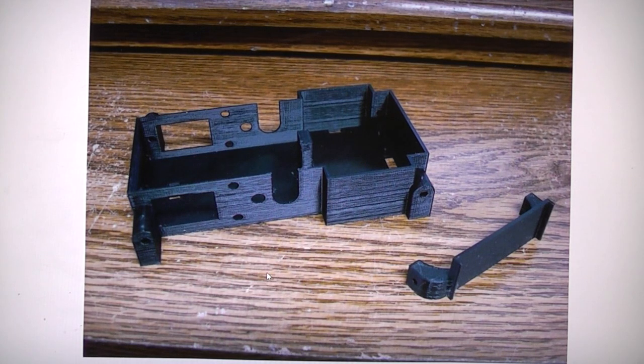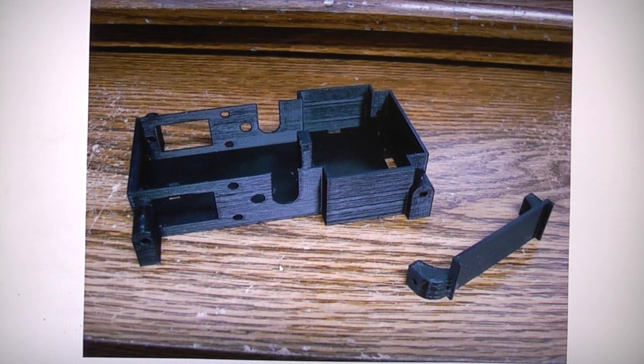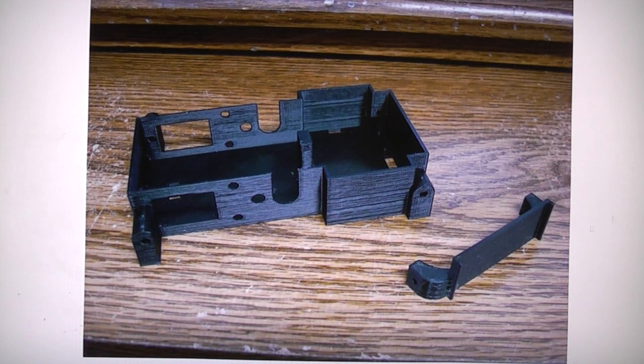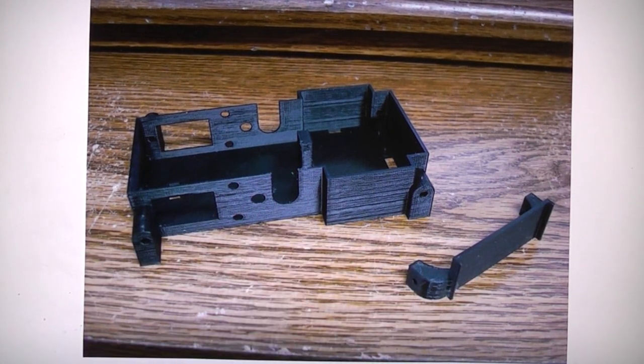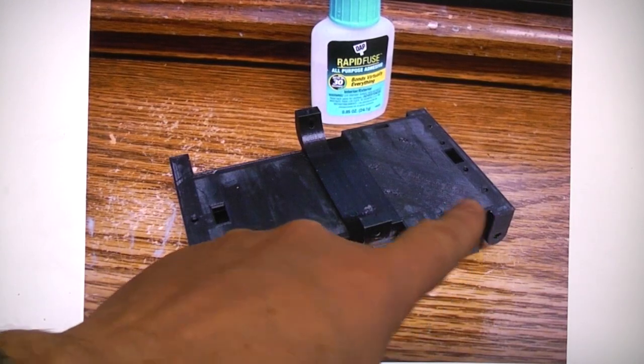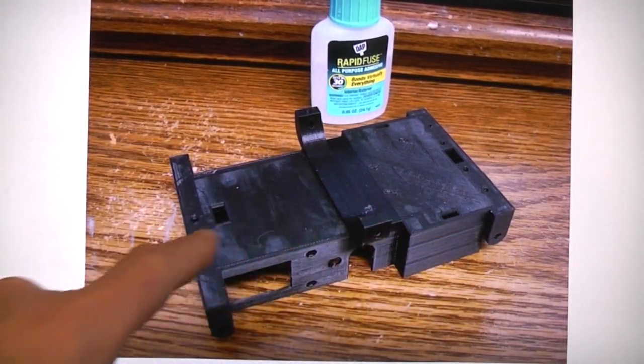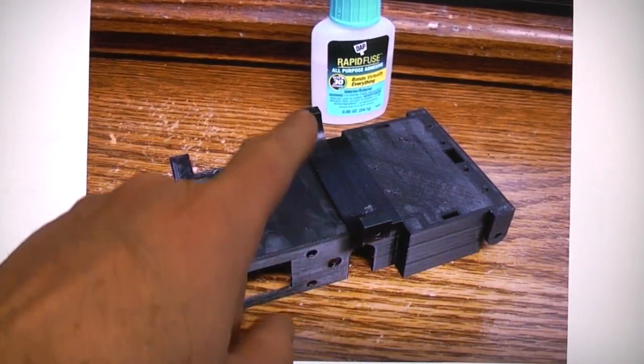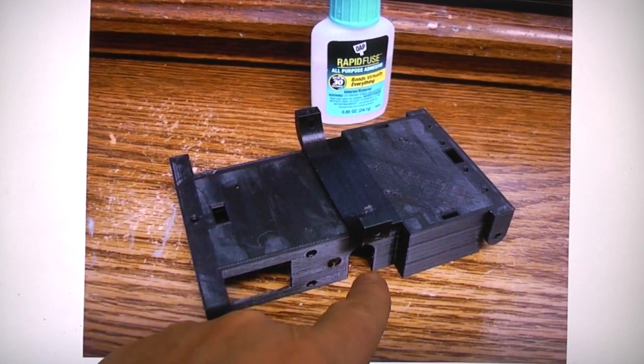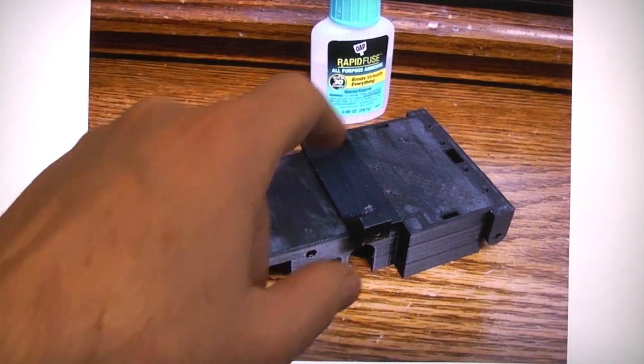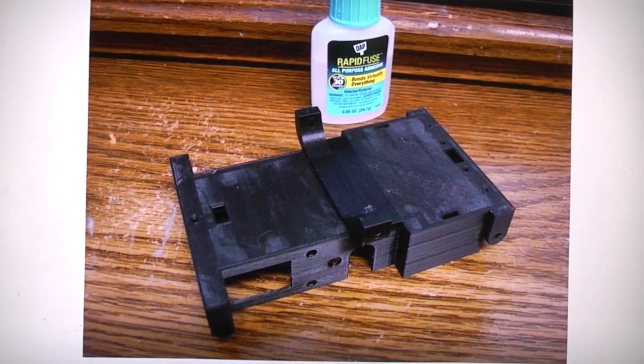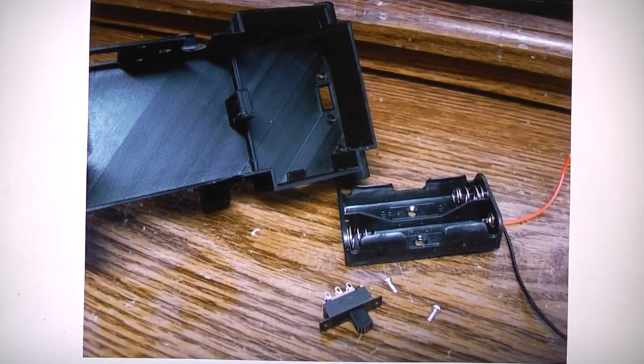Take this brace and glue it on. I flipped the part over - this is actually the top. The brace should line up with that opening, pushing all the way back and down. Put some glue in there and press it down.